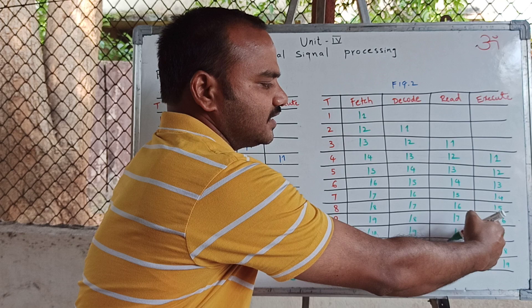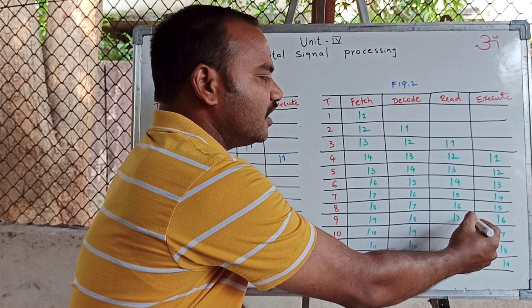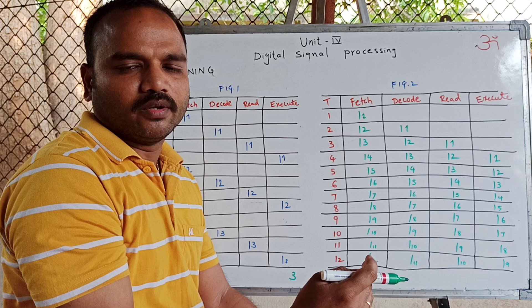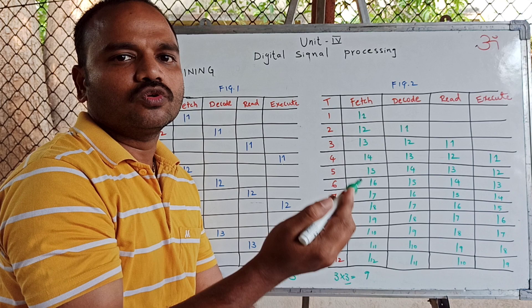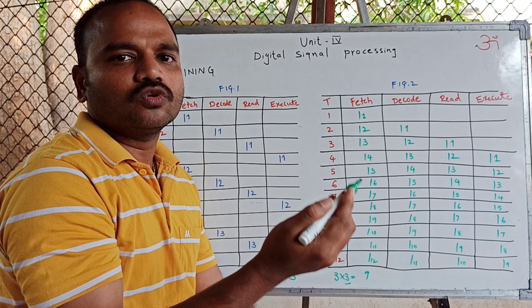The second drawback is: if one instruction, say L6, is a conditional JMP instruction, then the instructions that are in the read phase, decode phase, and fetch phase have to be saved into memory. Then the instruction at the location where the JMP instruction points must be fetched. These two are the drawbacks of the pipelined processor.